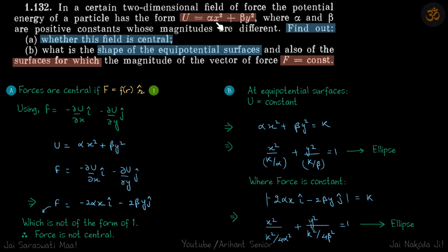We have a potential energy in the form of alpha x squared plus beta y squared. We need to find if the field is central and the shape of the equipotential surfaces.